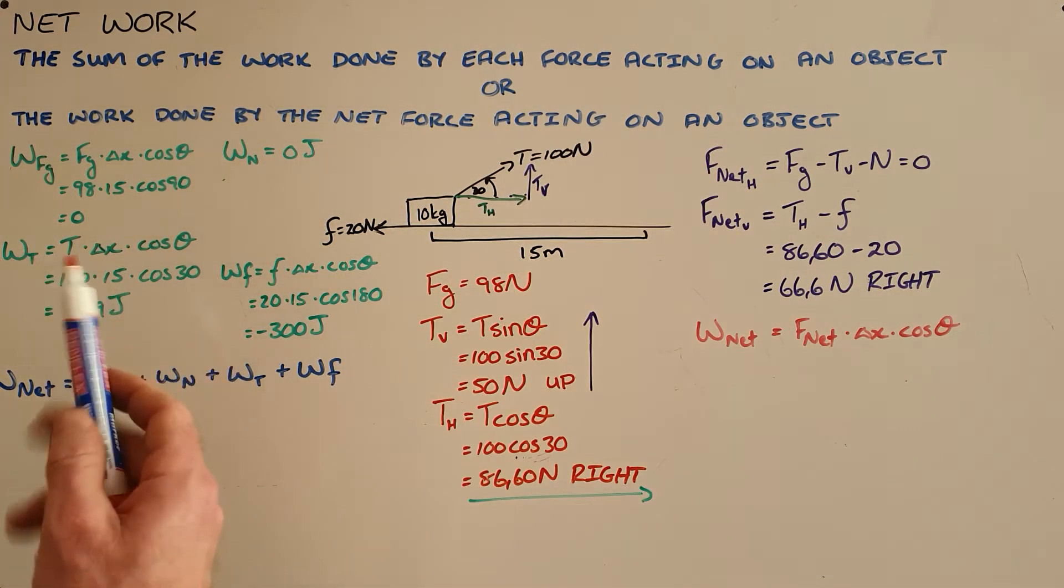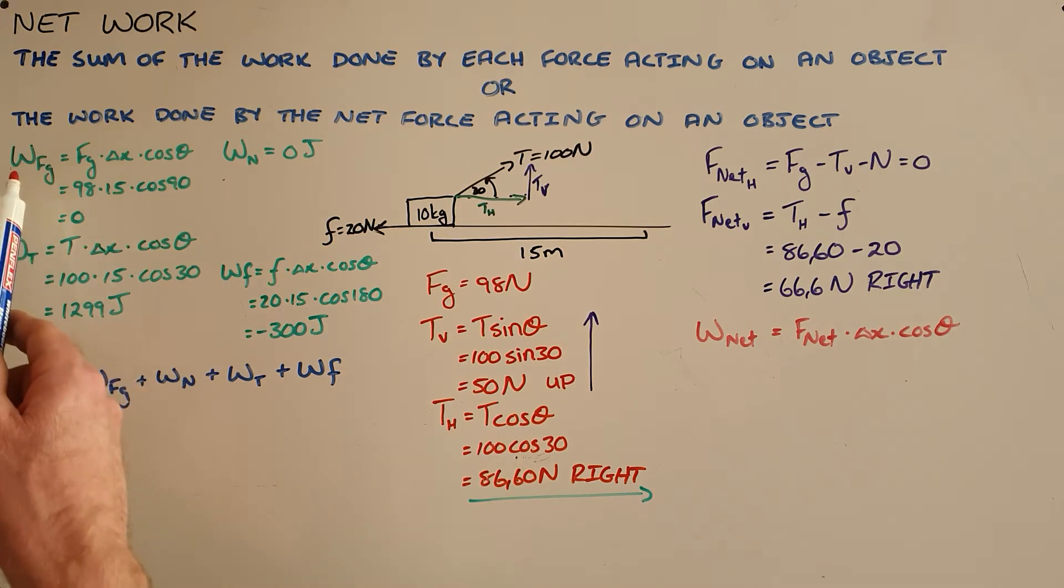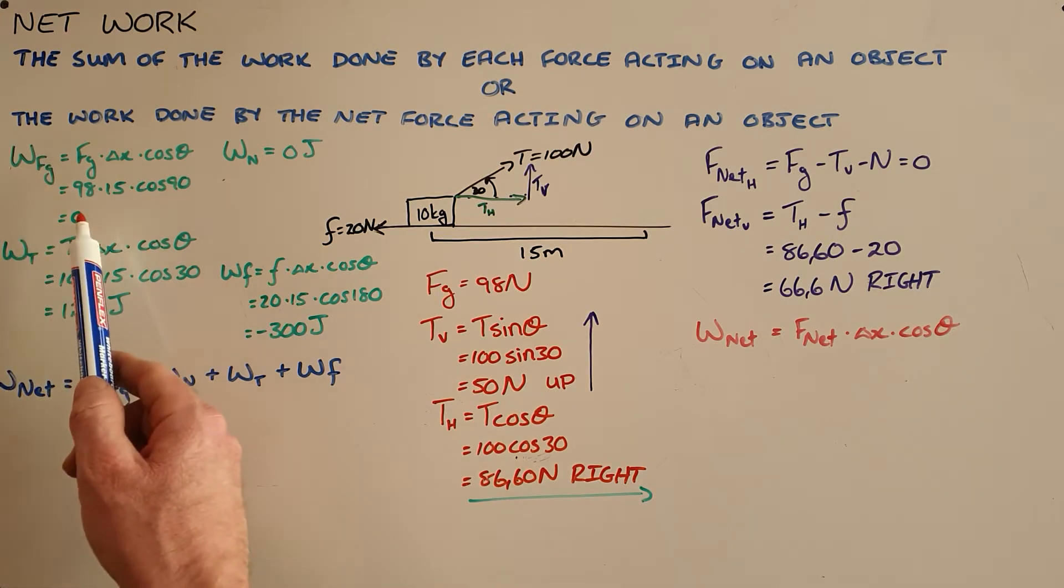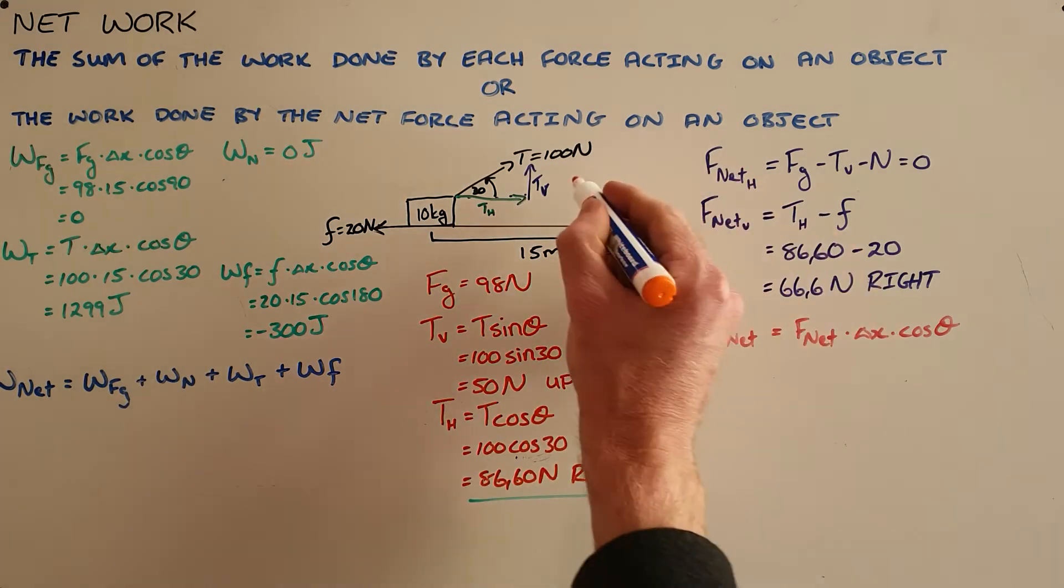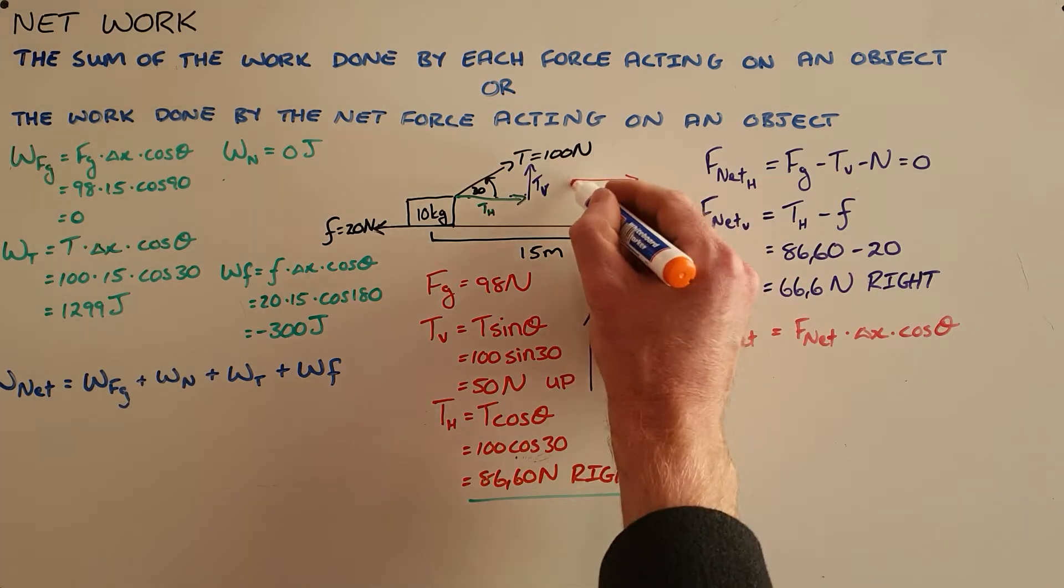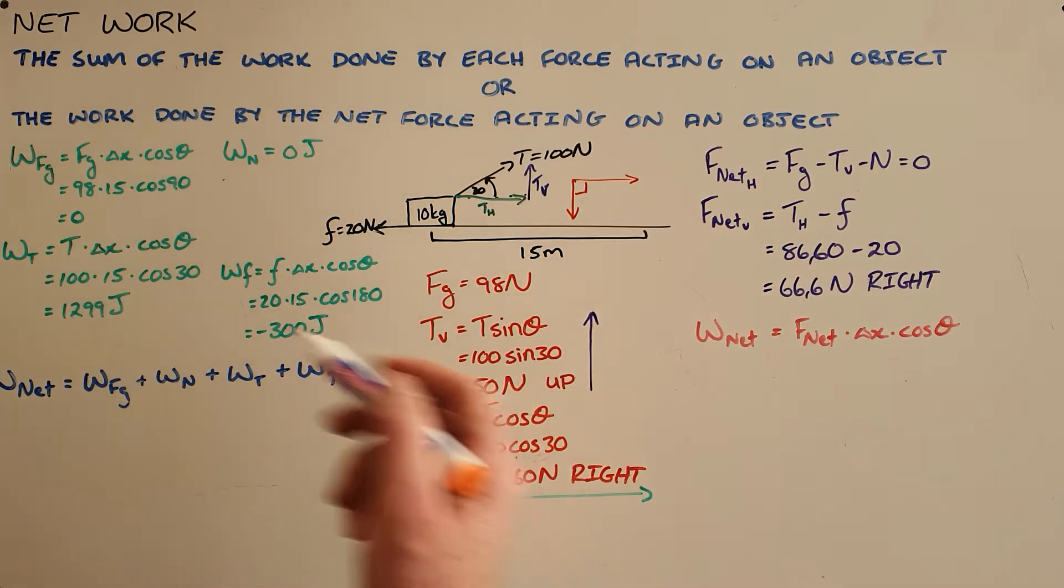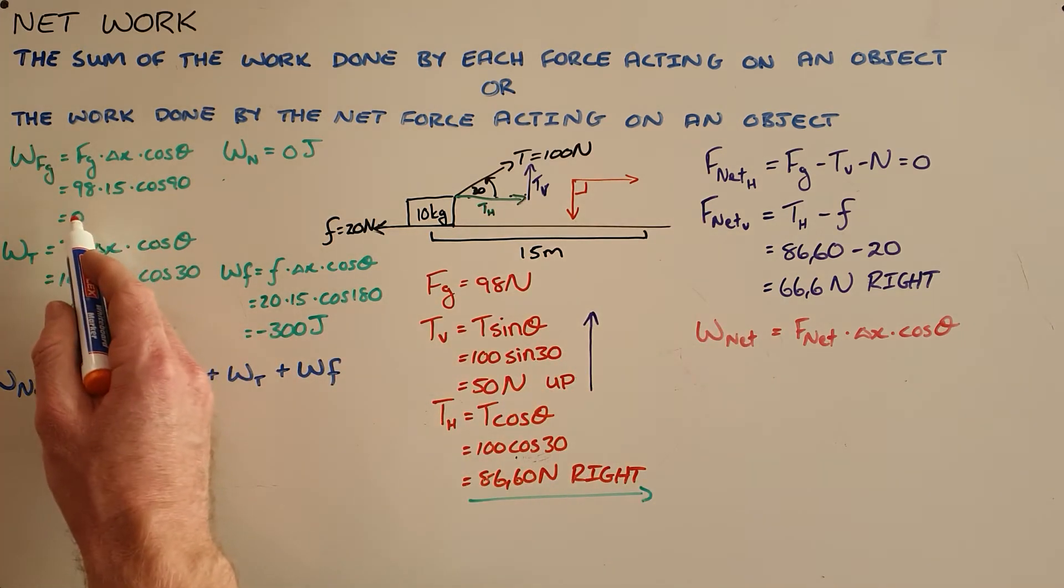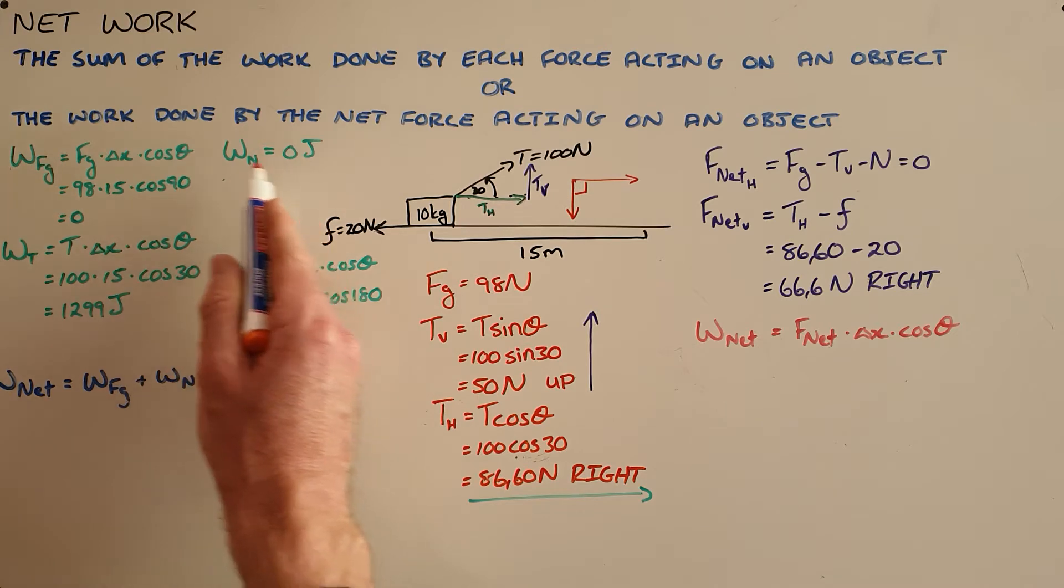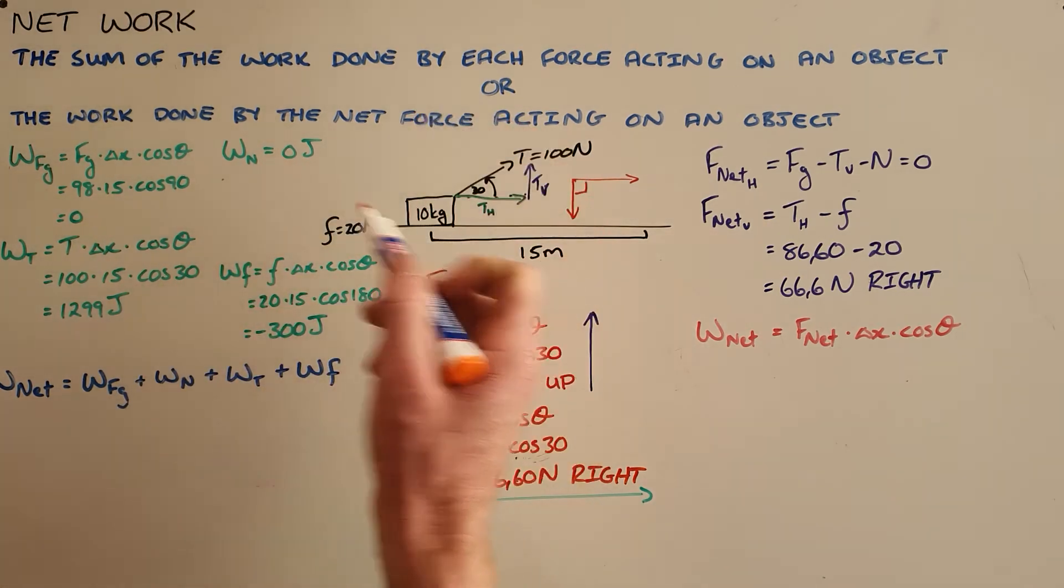So we start out by saying the work done by the gravitational force is zero joules. The reason for that is because the displacement is to the right and the gravitational force is at an angle of 90 degrees downward to that. So there's zero work done by the gravitational force. The same follows for the normal force acting upward from the surface.